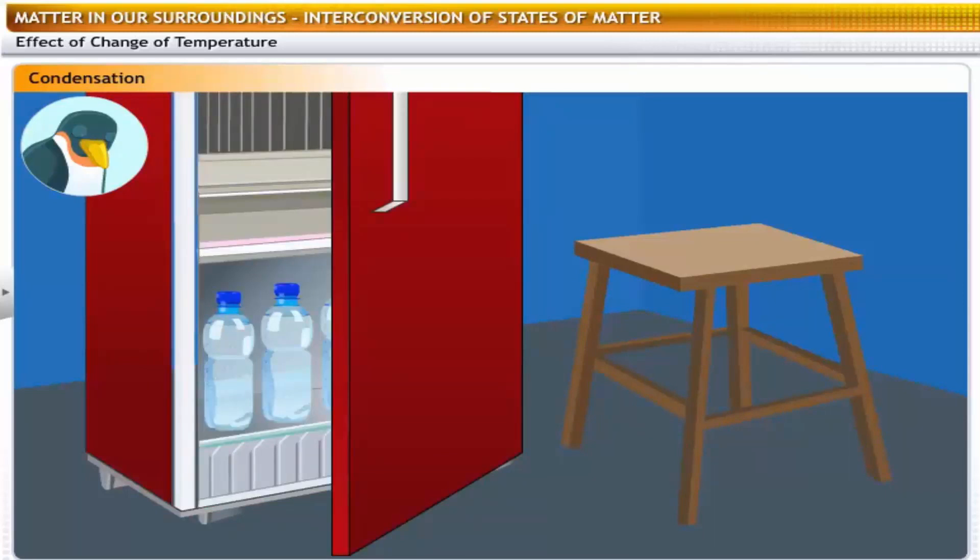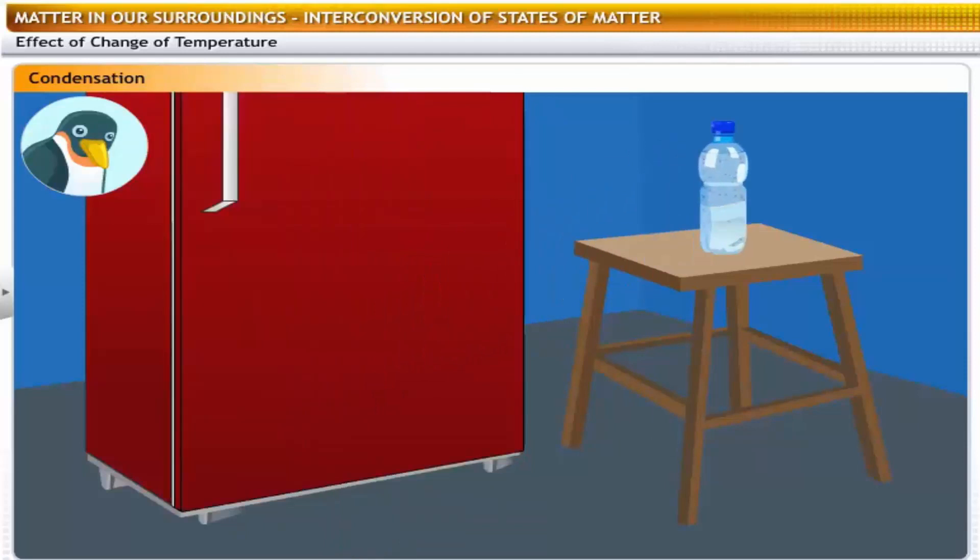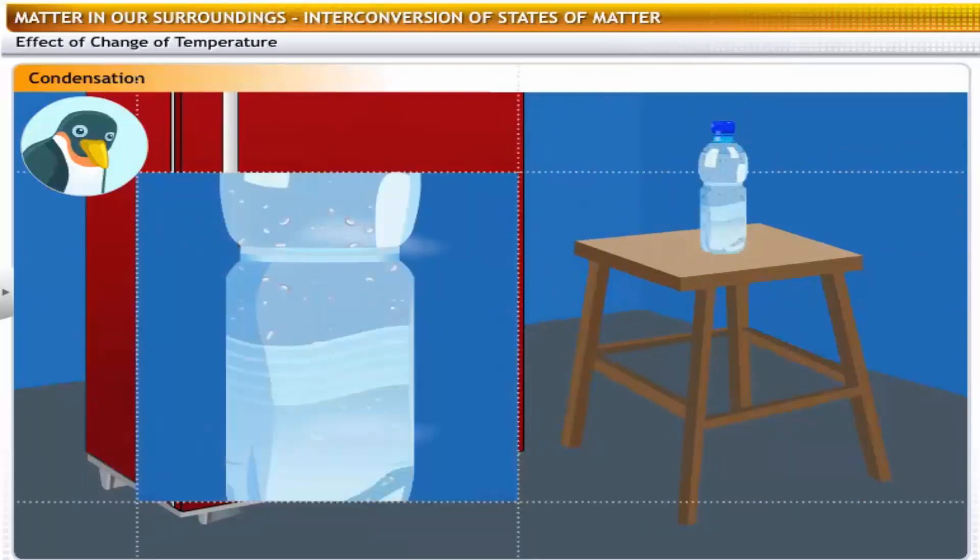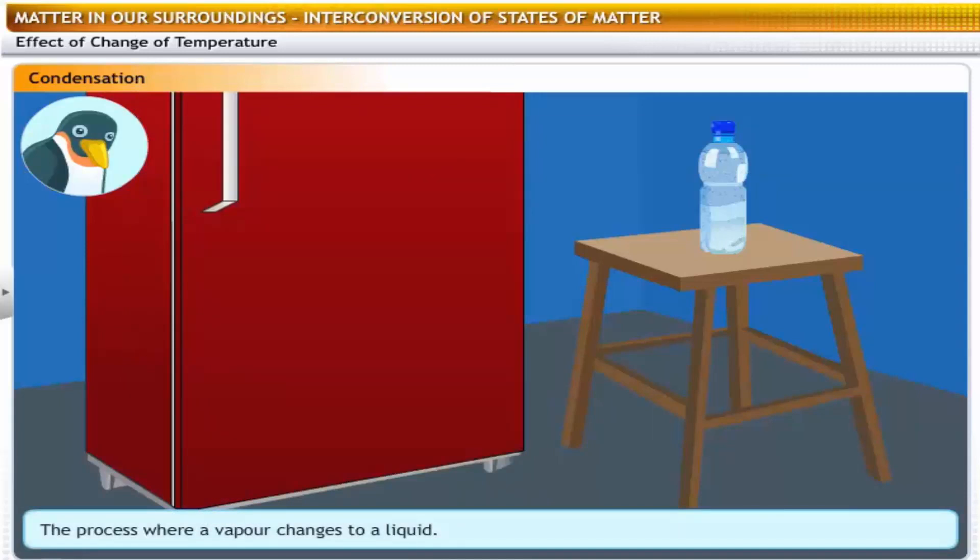Let's study this phenomenon with an example which is very common in our everyday life. Let's take an ice cold water bottle. Leave it on the table for two minutes. Observe water droplets on the outer surface of the bottle. These water droplets are condensed water vapor present in the air around the cold bottle. The process where a vapor changes to liquid is called condensation.